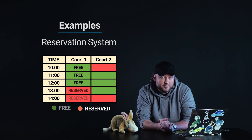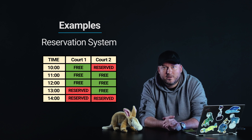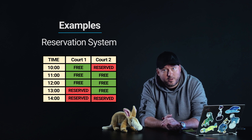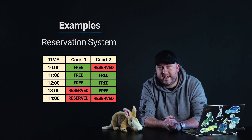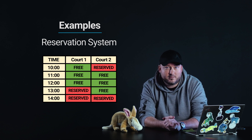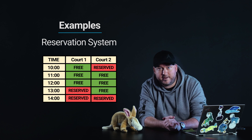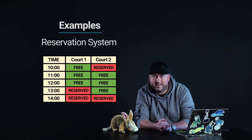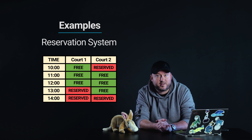How can we improve it? Now, table cells representing free slots have green backgrounds and the text 'free' inside. Those that represent reserved slots have a red background and the text 'reserved' inside. The color helps visual users to identify court availability. Importantly, it is not the only way to tell the difference, thanks to the text inside.